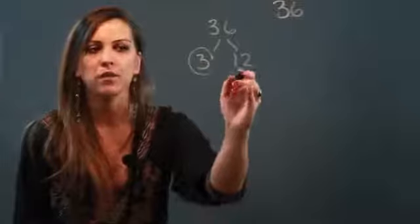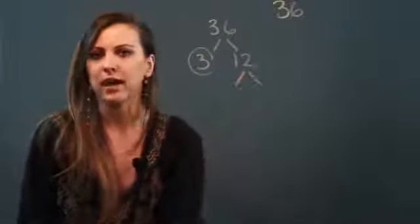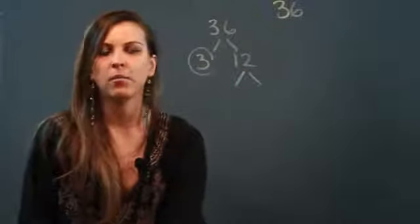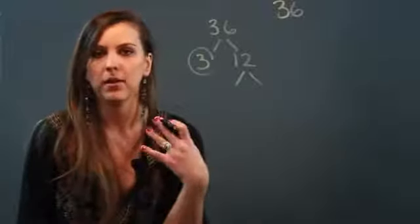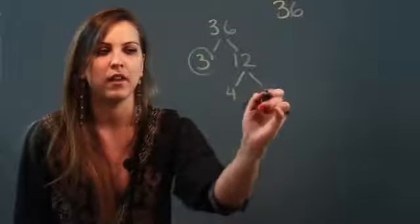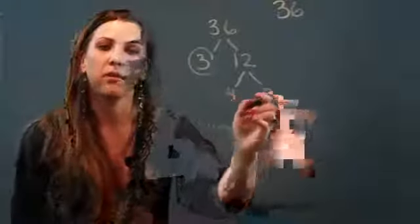I'm going to move over to 12 and continue to break it down into factors. So now you're thinking of two numbers that go into 12, and the numbers for me that come to mind are 4 and 3—you'll still get the same answer at the end. Now when I look at 4 and 3...